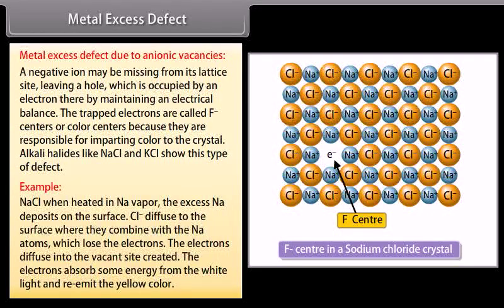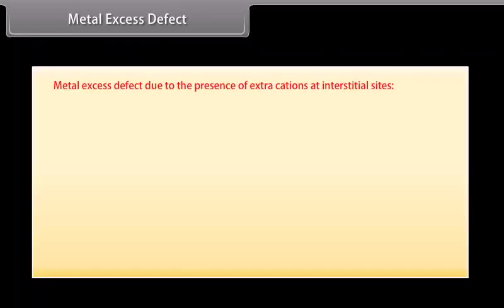NaCl when heated in sodium vapor: The excess sodium deposits on the surface. Cl- diffuse to the surface where they combine with Na atoms which lose the electrons. The electrons diffuse into the vacant site created. The electrons absorb some energy from the white light and re-emit the yellow color.